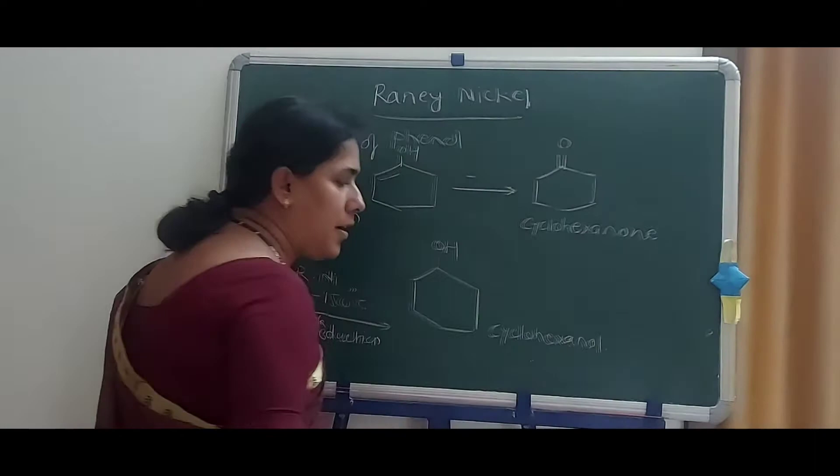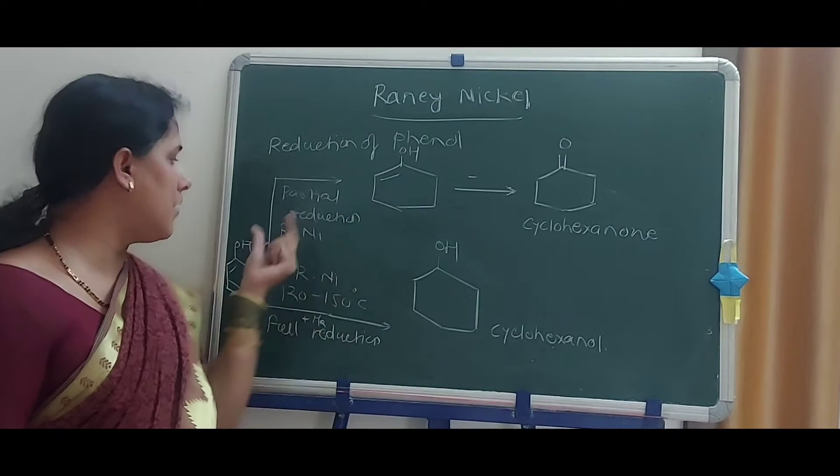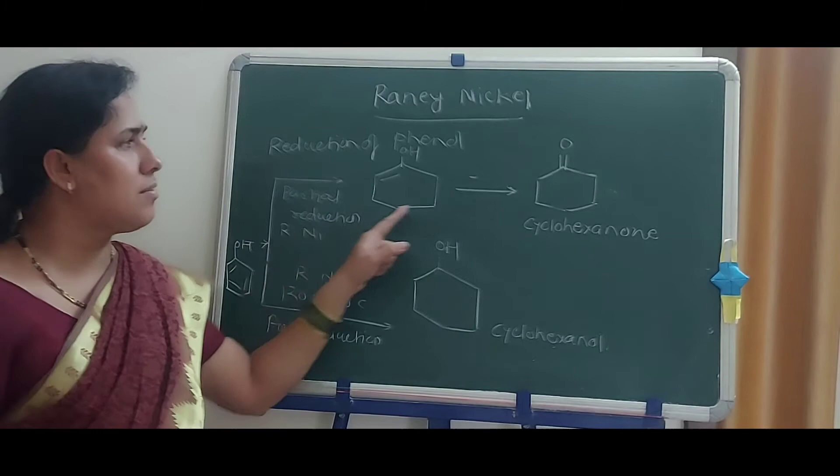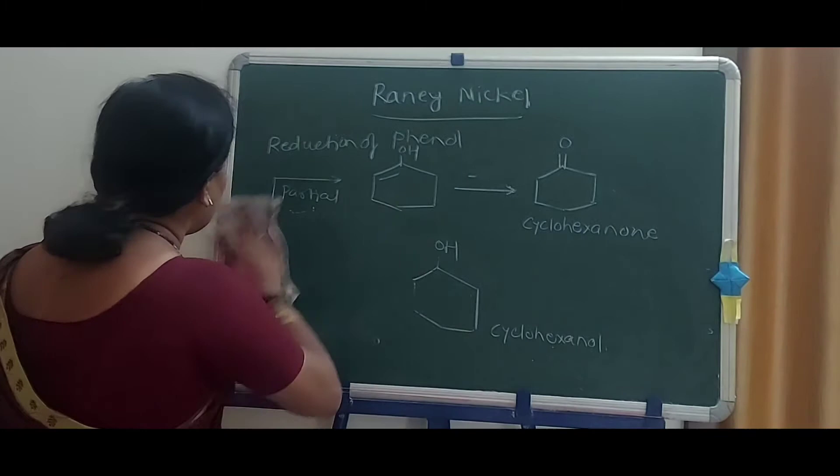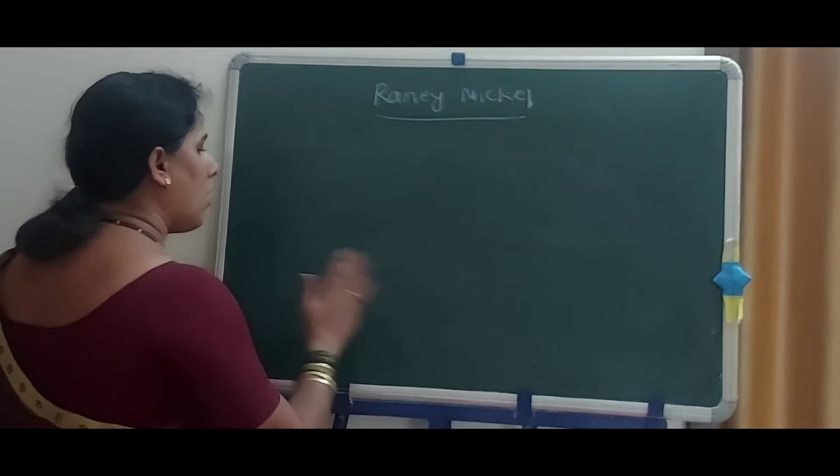The difference between the two reductions of phenol is: in partial reduction, cyclohexanol is formed; in full reduction, cyclohexane is formed. The temperature conditions determine which product is obtained. Next point is the reduction of aromatic ethers.